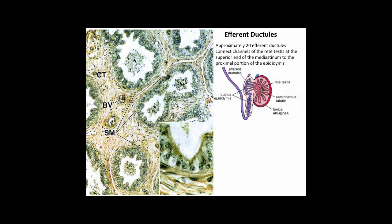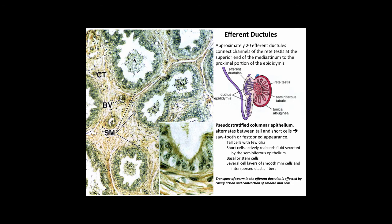There are approximately 20 efferent ductules connecting channels of the rete testis at the superior end of the mediastinum to the proximal epididymis. They consist of pseudostratified columnar epithelium with alternating tall and short cells, giving the surface a sawtooth or festooned appearance. The tall cells have a few cilia; the short cells actively reabsorb fluid. Basal stem cells are present along with several layers of smooth muscle cells and interspersed elastic fibers. Sperm transport here is effected by ciliary action and smooth muscle contraction.